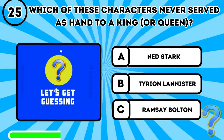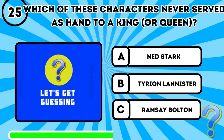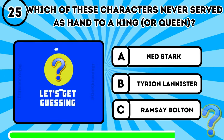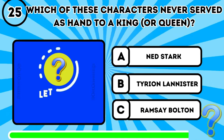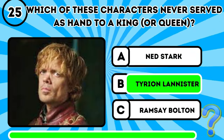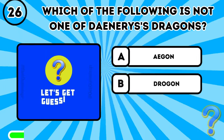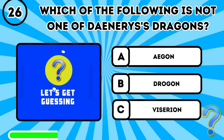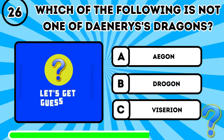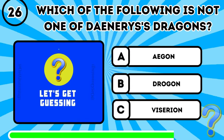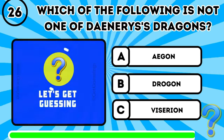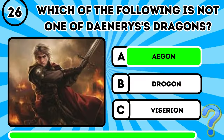Question 25: Which of these characters never served as Hand to a king or queen? It's B, Tyrion Lannister. Question 26: Which of the following is not one of Daenerys' dragons? It's A, Aegon.